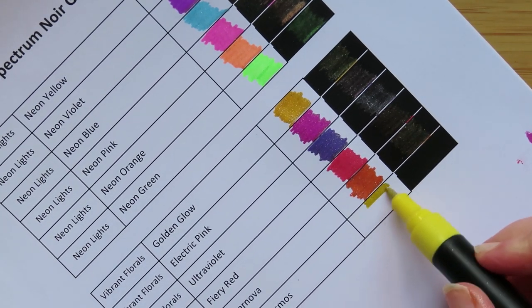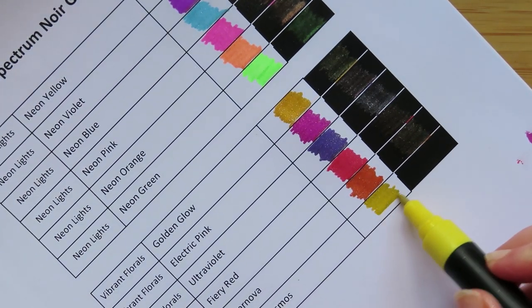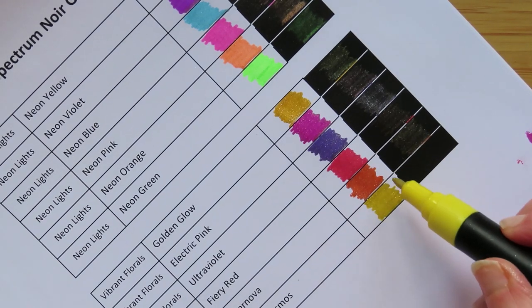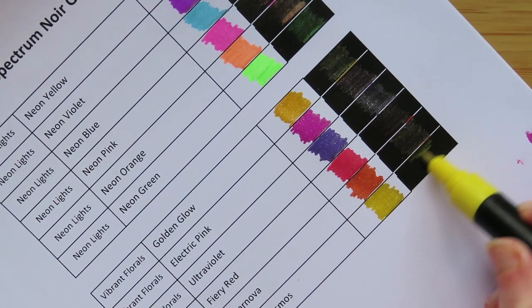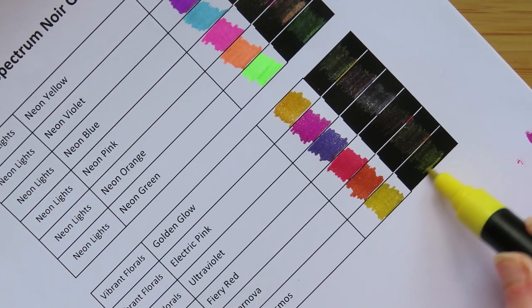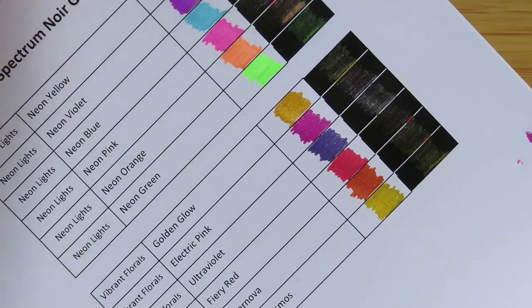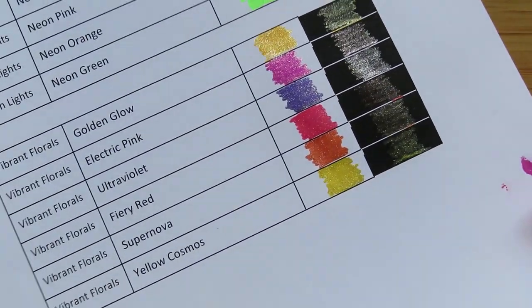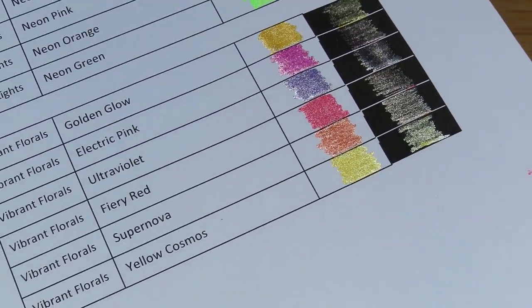This one is Supernova. Got some interesting names, haven't they? That's orange. And this one is Yellow Cosmos. These are lovely colors actually. You could have done with a green or a blue here. What was this one called? Vibrant Florals. You probably wanted a green. Pretty confused as to why there isn't a green. Beautiful colors though.